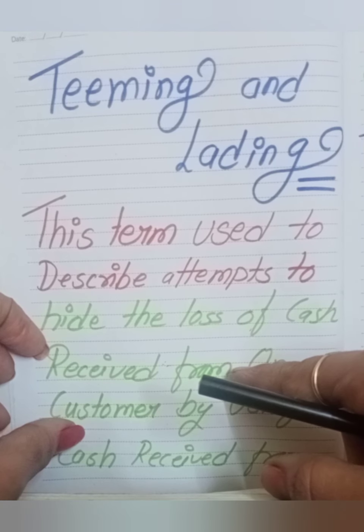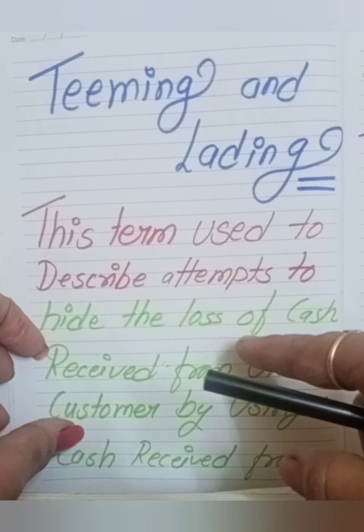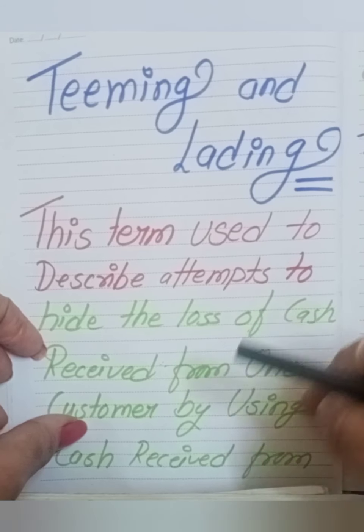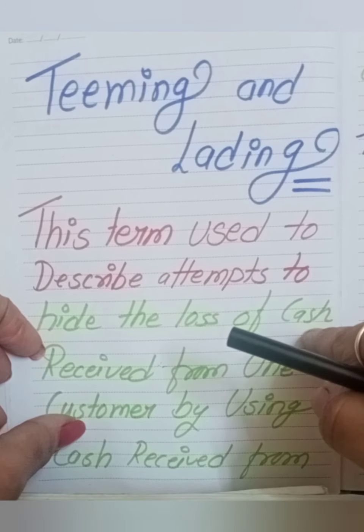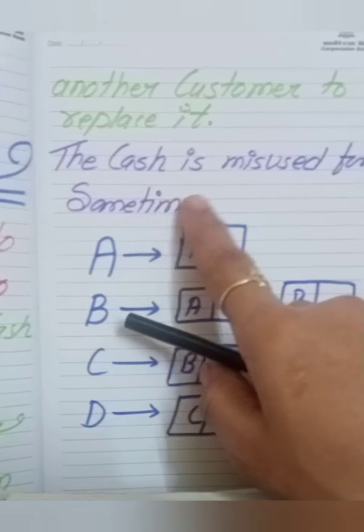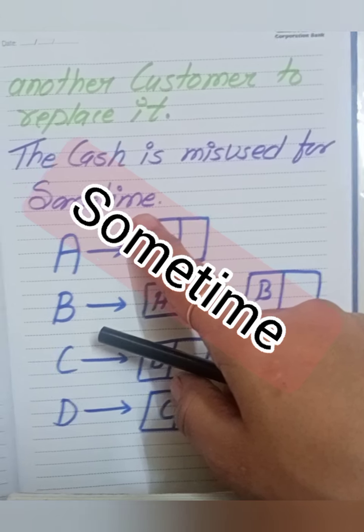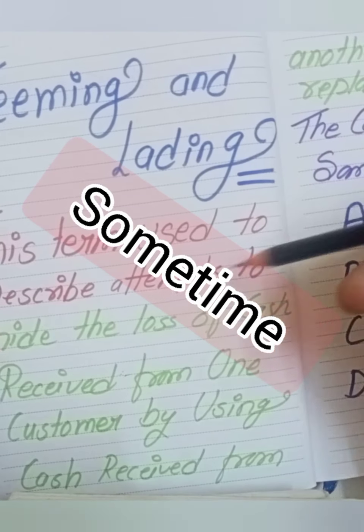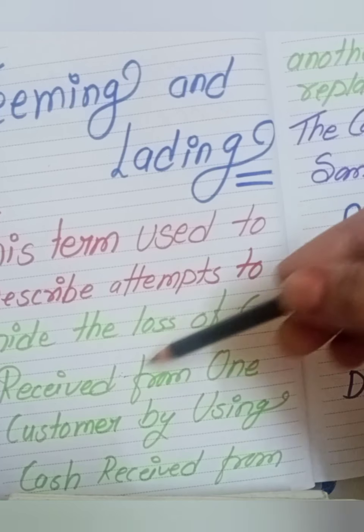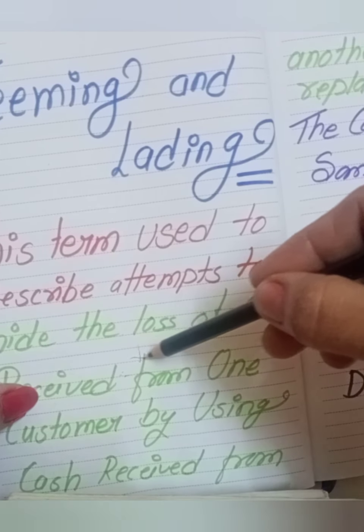This comes under teeming and lading. Now I am going to explain with an example. This cash is misused for some time. Sometimes what happens here is that to hide the loss of cash received, the cash is not actually received but at that time it is not revealed.